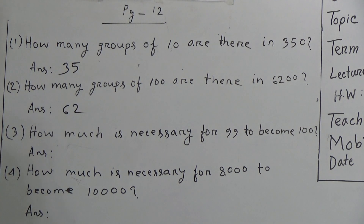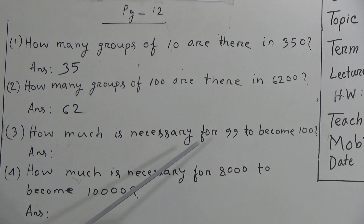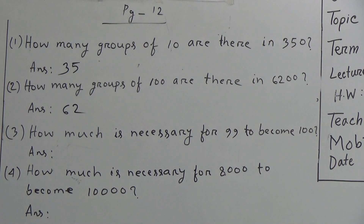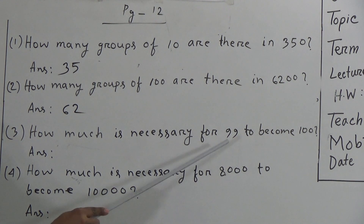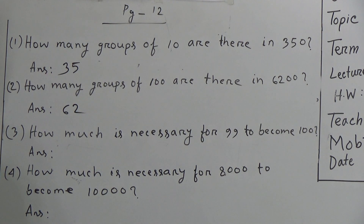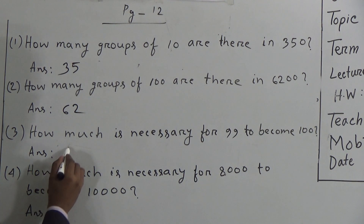Now we will solve question 3: how much is necessary for 99 to become 100? That means, which number is to be added with 99 so that we get 100? It is a very simple question. If we add 1 with 99, then we get 100. So the answer of question 3 will be 1.